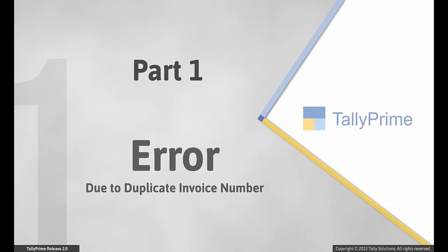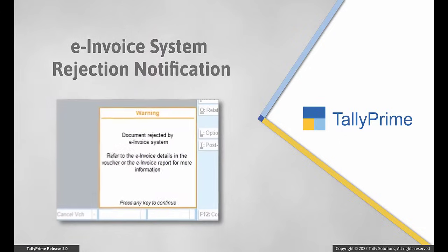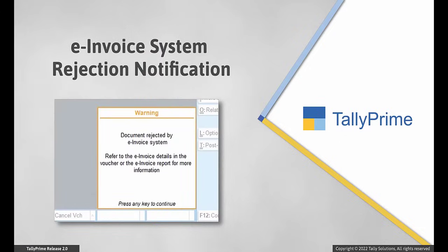Let us first look at the error that occurs due to duplicate invoice number. Consider that you had generated an e-invoice for a transaction with an invoice number. Thereafter, you had to cancel the invoice or you just created a new voucher with the same invoice number. In such a case, when you try to generate e-invoice for the transaction, the e-invoice system rejects it.